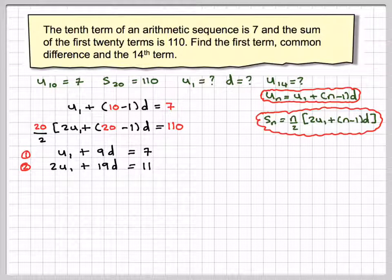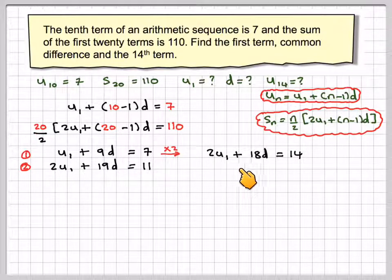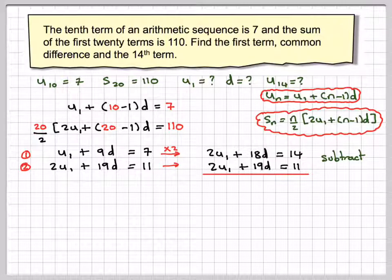For the top one equation 1, this one equation 2. Attempt to make the U's the same. So times by 2, we're going to get 2U1 plus 18D is equal to 14. And then write the other one directly underneath. Because we're going to eliminate U1, we're going to subtract. So 2U1 minus U1 gives me nothing. 18D minus 19D gives me minus D. And 14 minus 11 gives me 3.